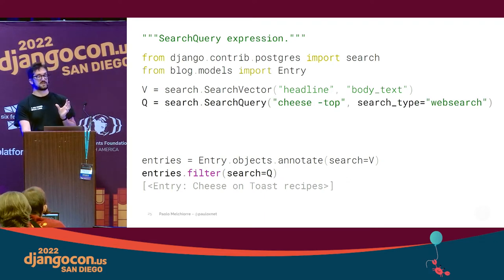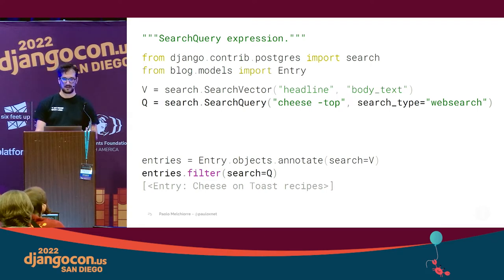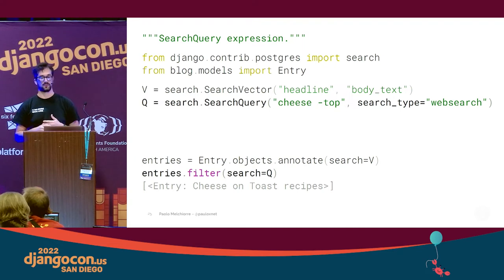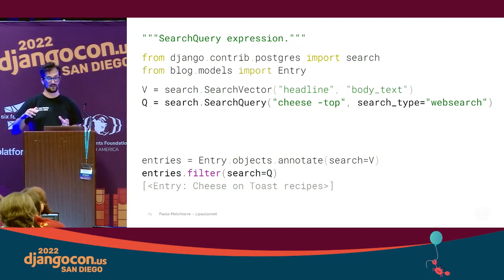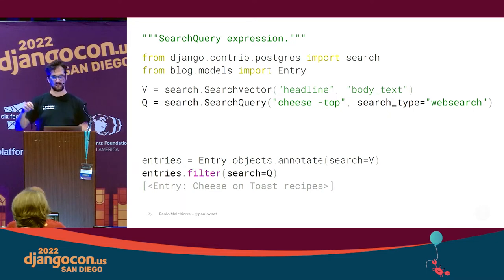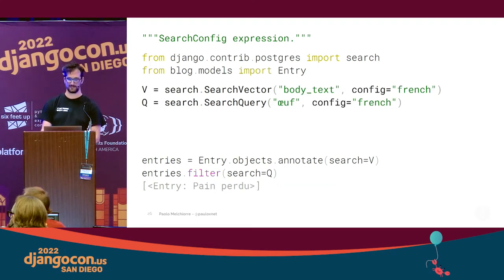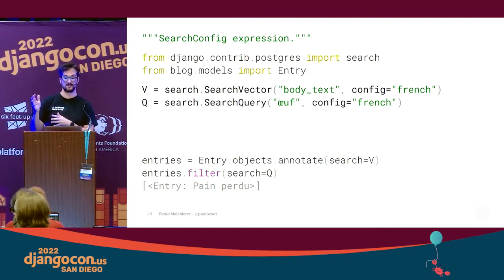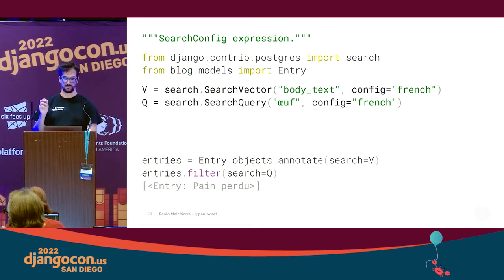To search using a more complex query text, we can use the SearchQuery expression. We can also use common search syntax directly in the query using the web search type — for example, we can search for a word while removing results that contain a second word, having a more precise result. To perform a full-text search in a specific language, we can use the search config expression, specifying the language in both the document and the query. This gives more precise results in the specified language, and Postgres supports almost 30 different languages.